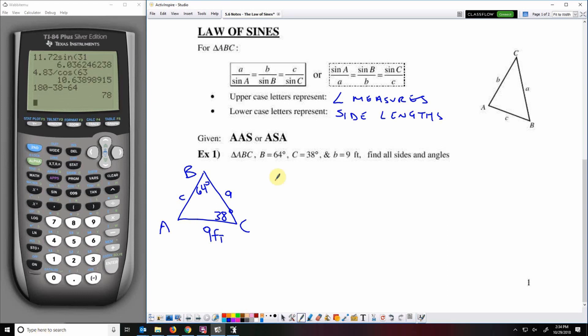And to get the measure of angle A, that's going to be the easiest part. I just have to do 180 minus the two angles that I know. And that's 78. So that's the measure of angle A. So I'm going to write that into the picture also.